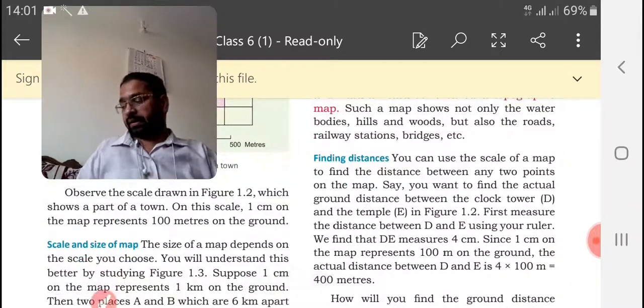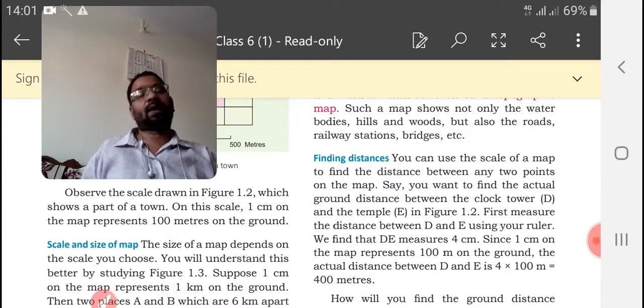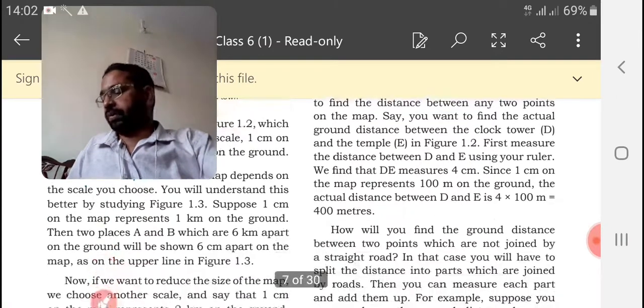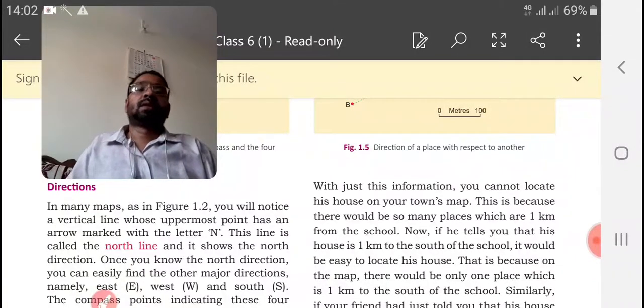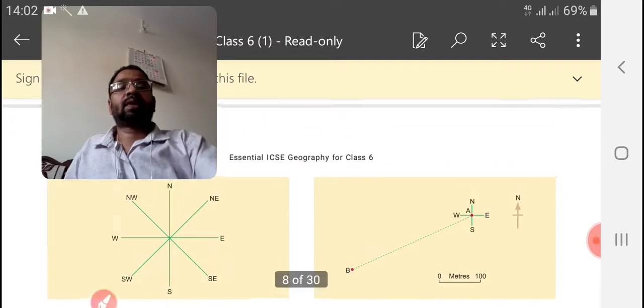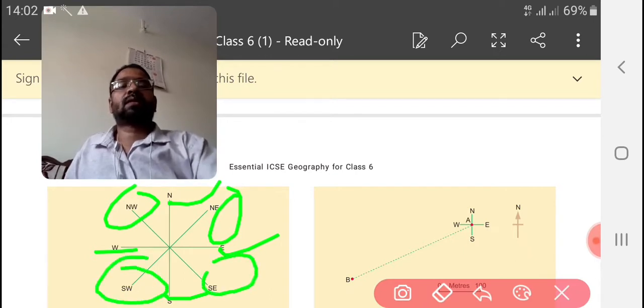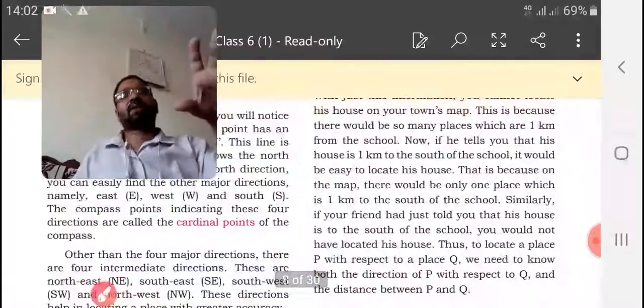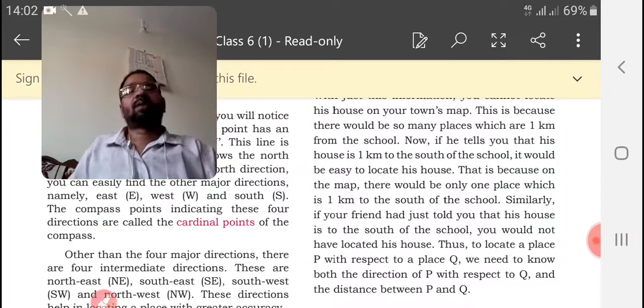Then next important thing: distance. For finding distance we used like a thread or a scale. Then important thing we learned: we have to know about the direction in order to find out the particular place in a particular area. There are four directions: North, South, East, West. Then North-West, North-East, South-East and South-West. These are the directions. Usually if there is North direction showing or marked on the map, then we are taking top of the map as a North direction.